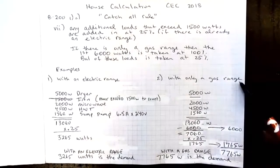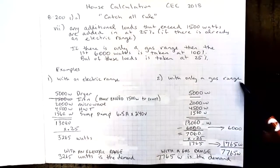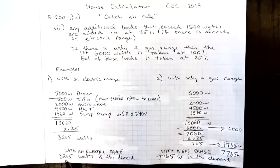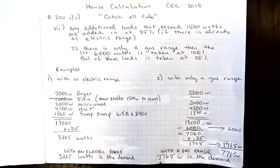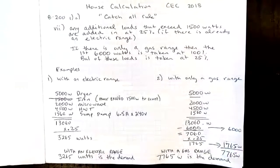These two numbers now add up to the total demand that we would apply for the items in the catch-all rule when there is only a gas range in our home. Notice that when we have an electric range, those items would cause a demand of 3,265, but when we only have a gas range, the demand is 7,765, substantially more.